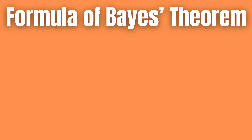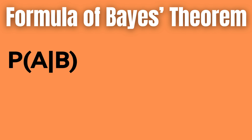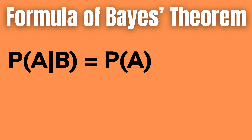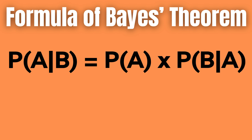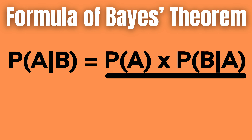The formula for Bayes' theorem is written as: probability of A given that B is observed equals probability of A times probability of B given that A is observed, divided by probability of B.